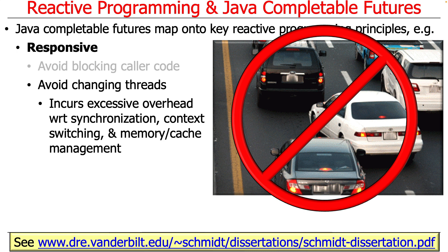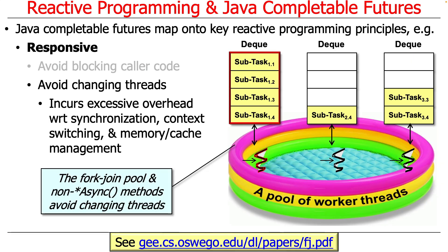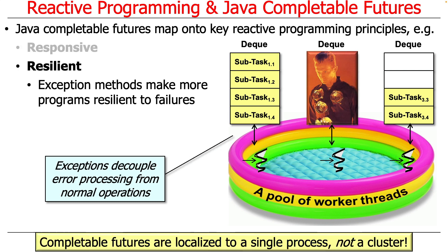My PhD dissertation from many years ago talks about a lot of this overhead — you might want to take a look at that. There are cool ways to avoid changing threads by using the completable futures framework. There are non-async methods, and the Java fork-join pool — they all try to work very carefully to avoid having to change threads.